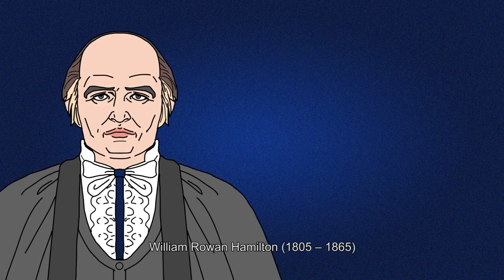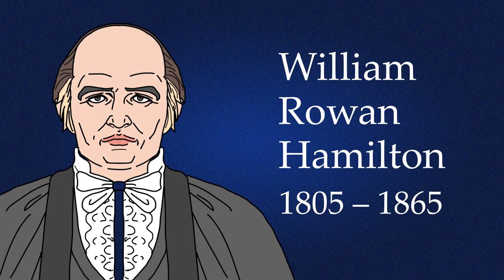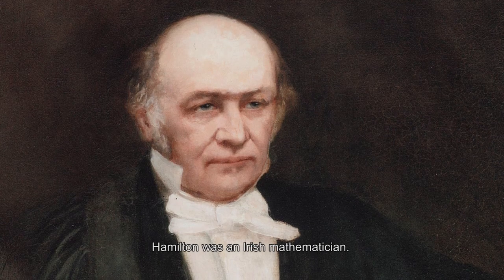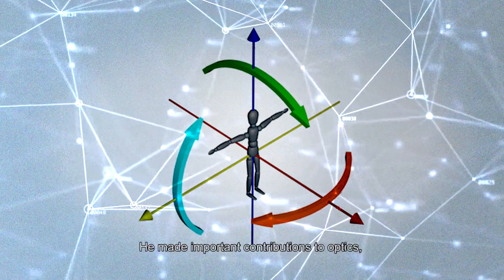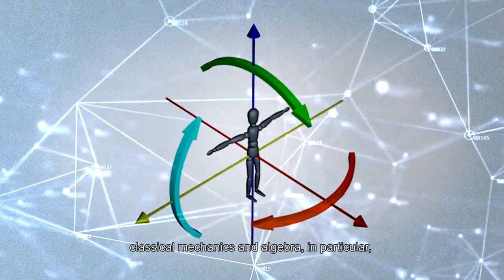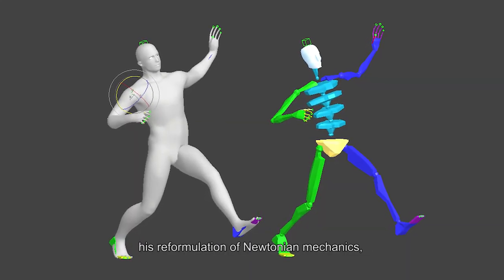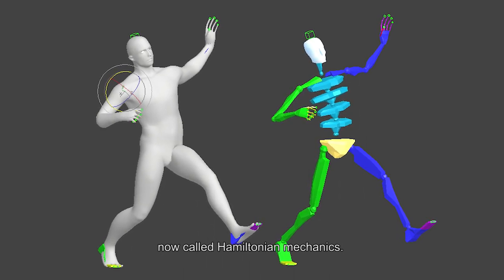William Rowan Hamilton, 1805–1865. William Hamilton was born in Dublin, Ireland on the 4th of August 1805. Hamilton was an Irish mathematician who made important contributions to optics, classical mechanics, and algebra — in particular, his reformulation of Newtonian mechanics, now called Hamiltonian mechanics.